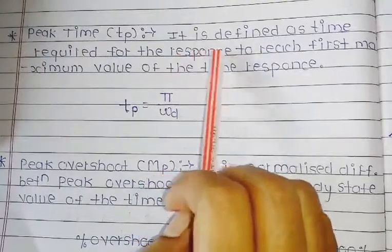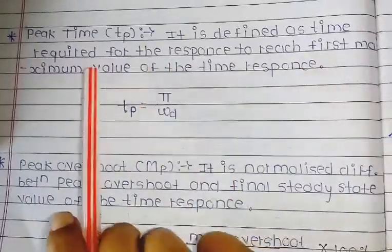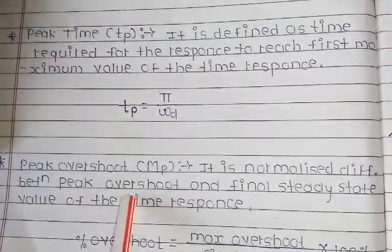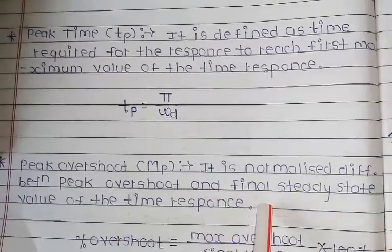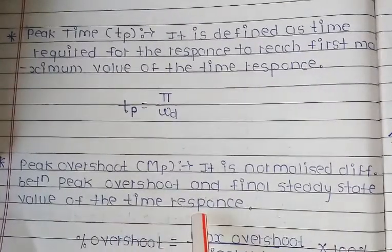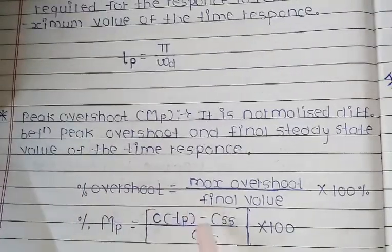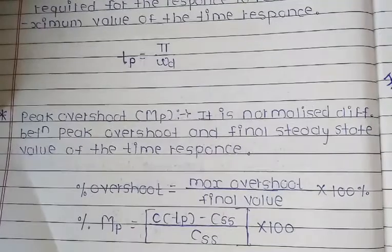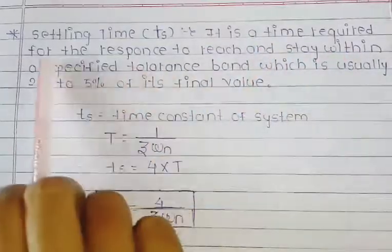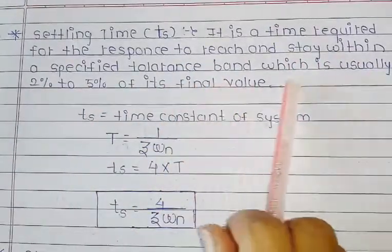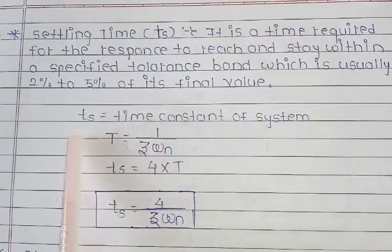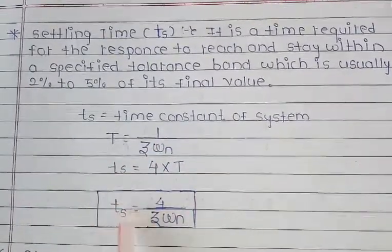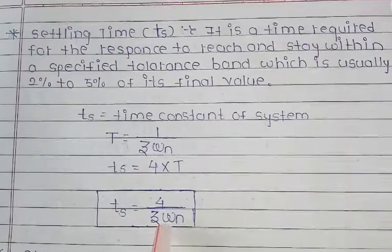Next is peak time Tp: defined as the time required for the response to reach the first maximum value of the time response. Formula: Tp equals pi upon omega-d. Peak overshoot is denoted as Mp — it is the normalized difference between peak overshoot and the final steady-state value. Peak overshoot equals C(tp) minus C(ss) upon C(ss) into 100. Settling time Ts is the time required for the response to reach and stay within the specified tolerance band of 2% to 5%. Formula: Ts equals 4 into T, or Ts equals 4 upon zeta omega-n.